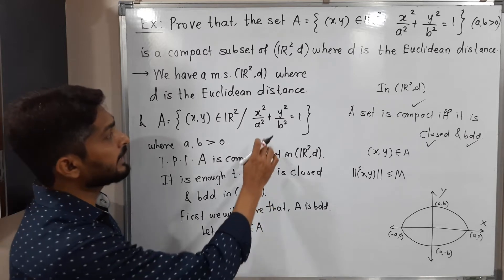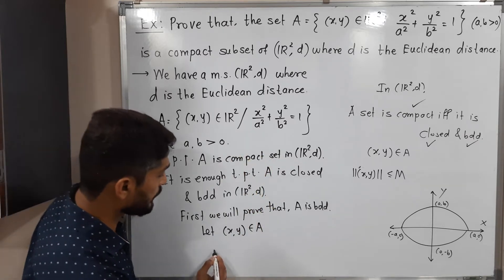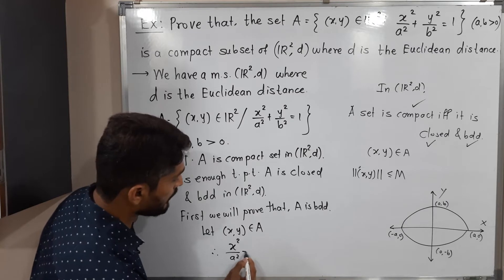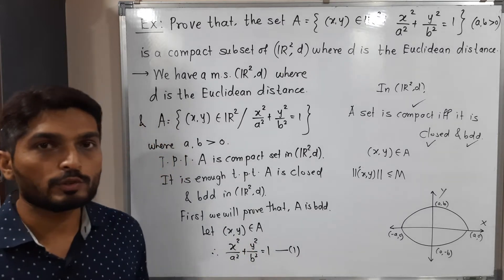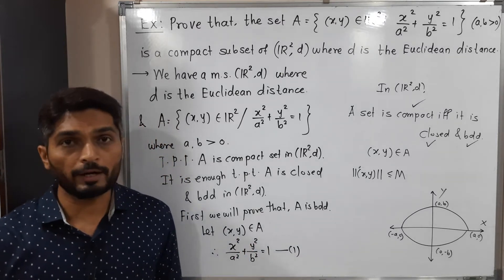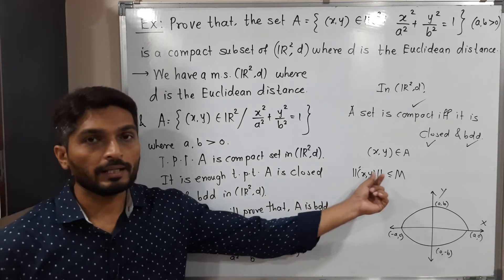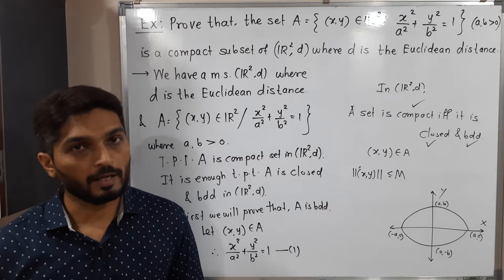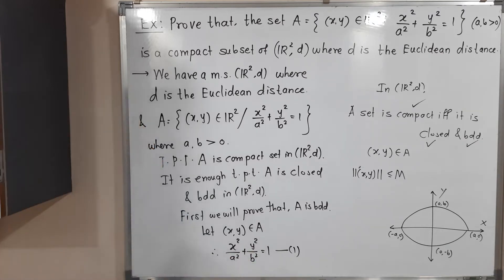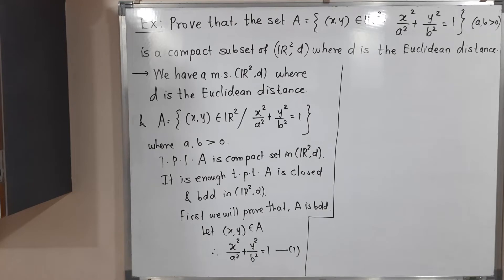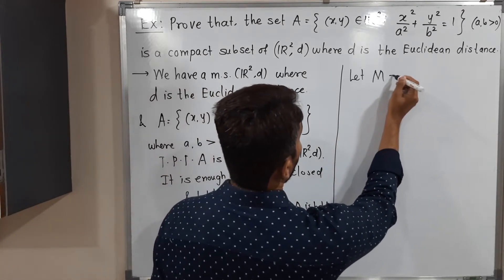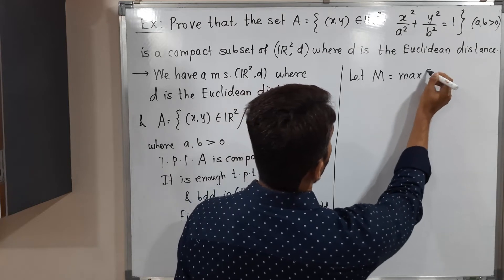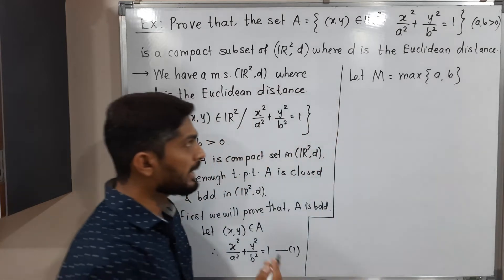Since (x, y) ∈ A, it satisfies the condition of A, so x²/a² + y²/b² = 1 — call this equation (1). We need to prove that ‖(x,y)‖ ≤ M for some positive real number M. We choose M = max(a, b), the maximum of a and b.